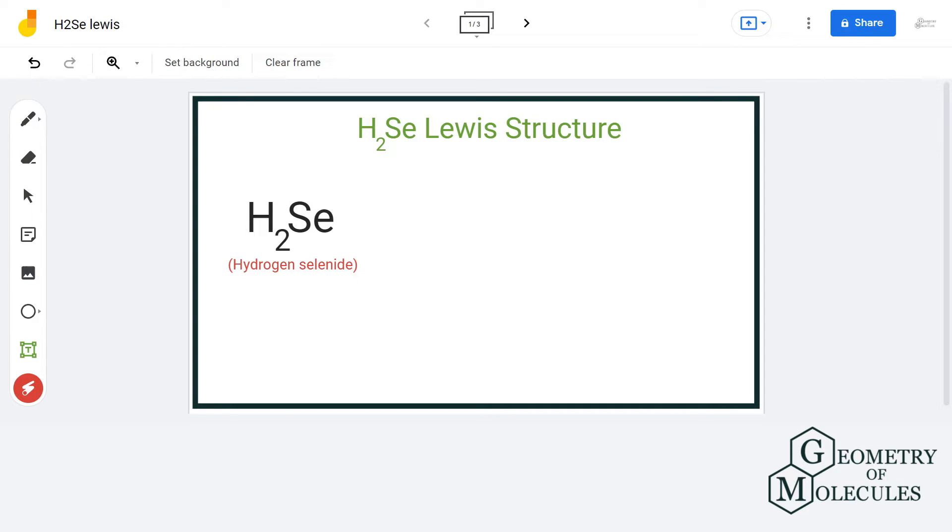Hi guys, welcome back to our channel. In this video we are going to look at the Lewis structure of H2Se molecule. It's a chemical formula of hydrogen selenide, and to determine its Lewis structure we will count the total number of valence electrons.